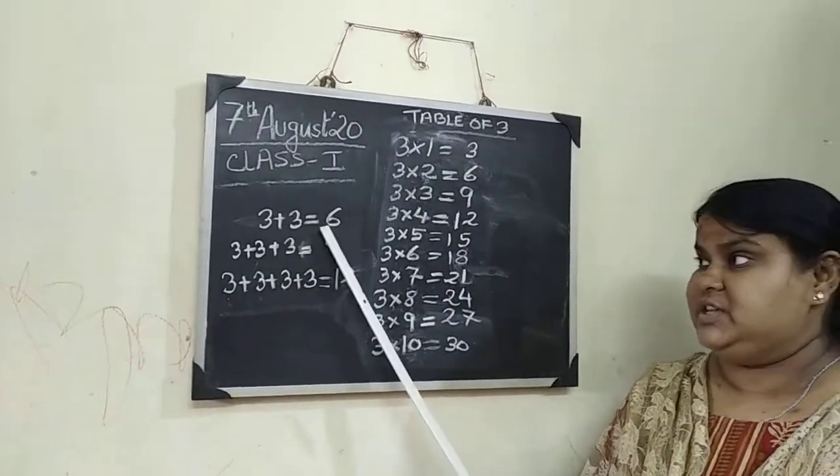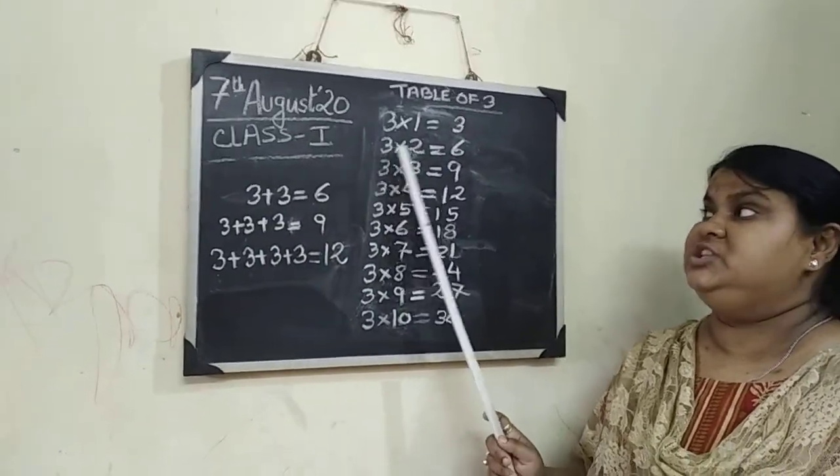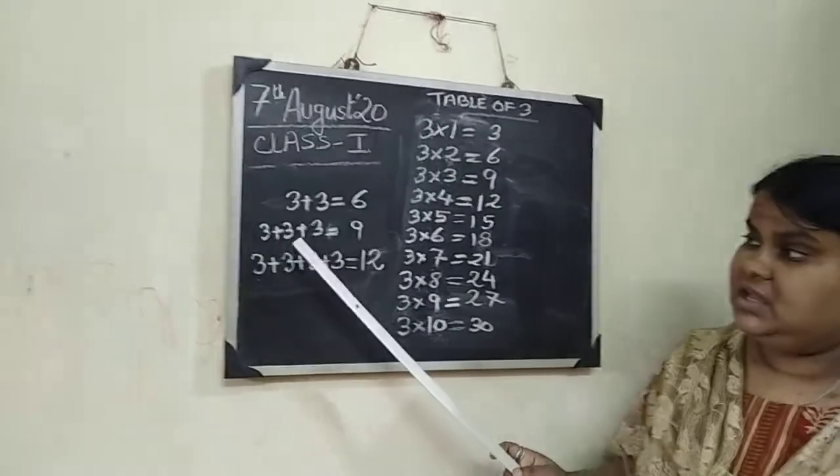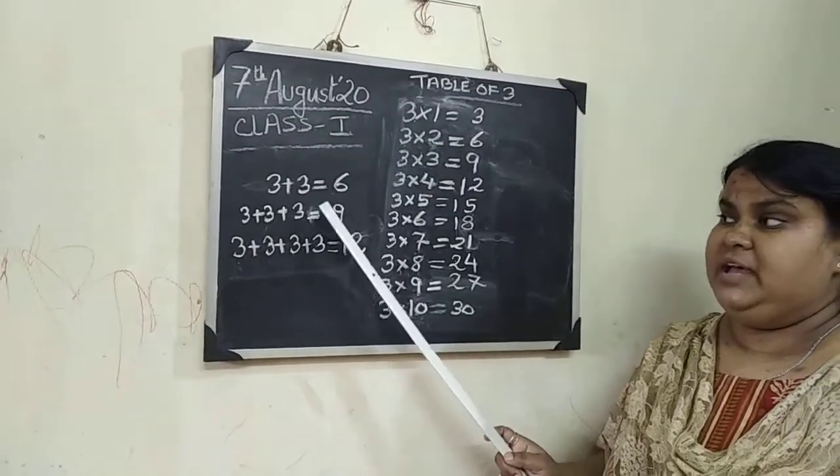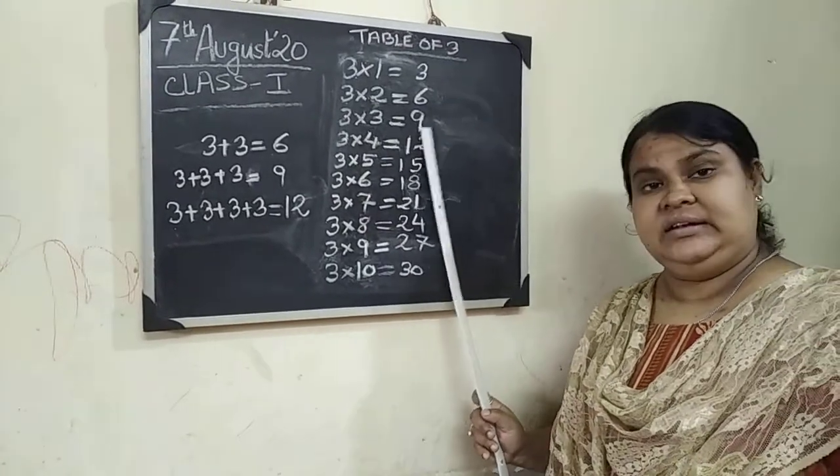See over here 3 plus 3 equals 6. But in multiplication we just only write 3 times 2 is 6. Next, 3 plus 3 plus 3 equals 9. But in tables, 3 times 3 is 9.